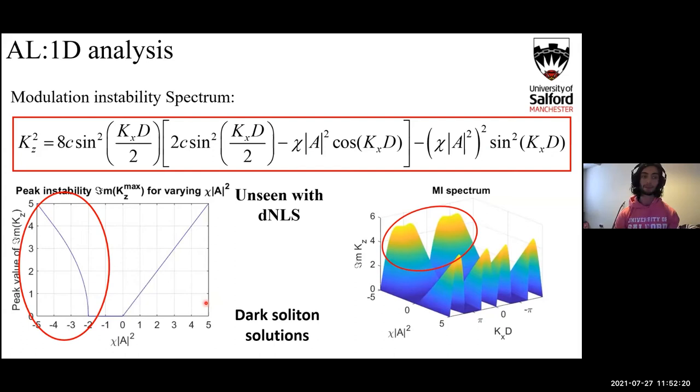So then what we can do as well is plot this MI spectrum while varying chi mod A squared, as well as k_x d. The reason we vary chi mod A squared as a couple is because everywhere it appears in the dispersion relation, so here and here, they're coupled together, so it's perfectly fine to do this. In the positive region or the self-focusing regime, we see this bow tie structure again. But if you look in the self-defocusing, so back here, we get this really broadband structure. In this self-defocusing regime, for at least the dNLS, you would not get this—it would be completely flat—but for the Ablowitz-Ladik you do get this broadband structure. This is actually the same criteria in which solid dark soliton solutions exist, which is something that isn't seen with the dNLS.